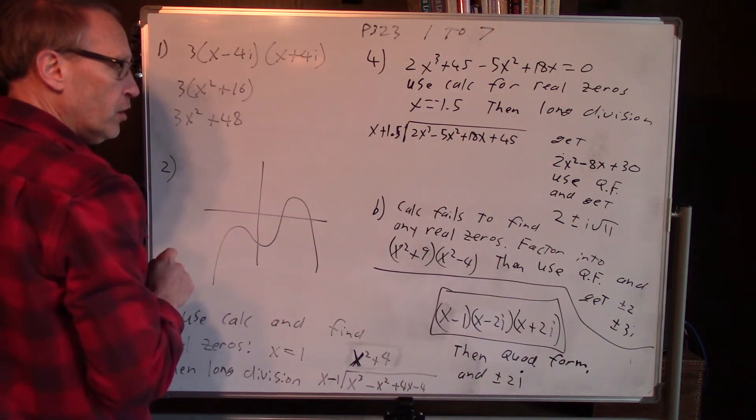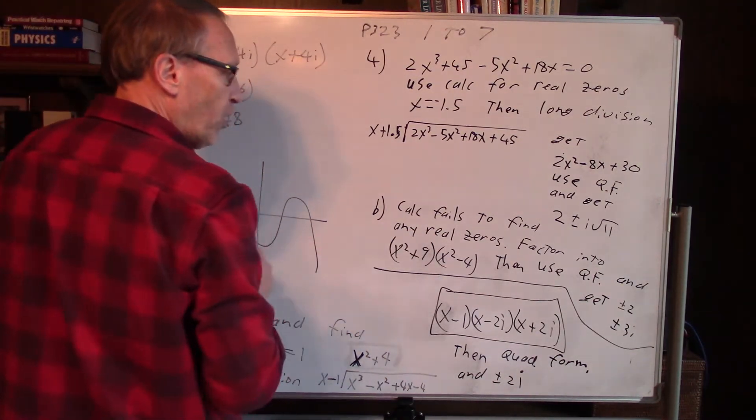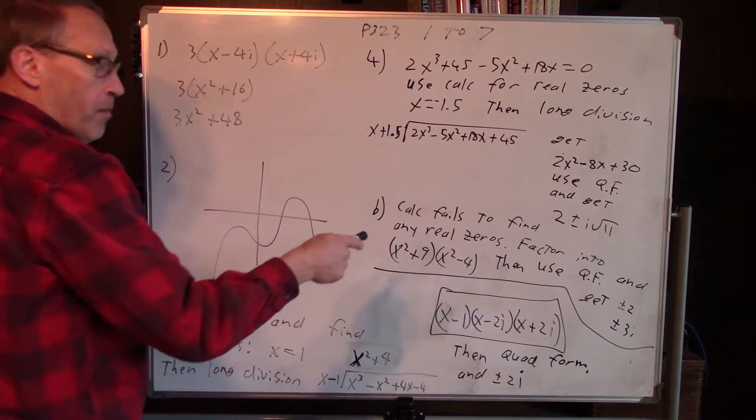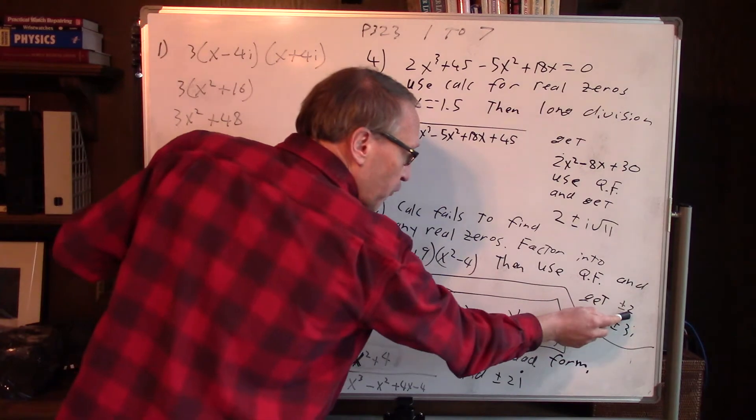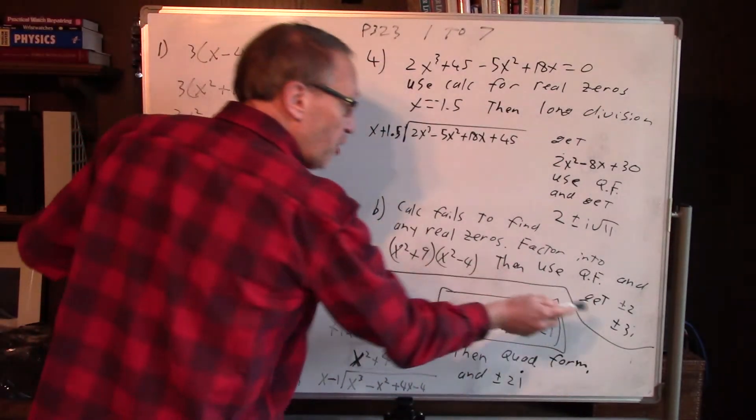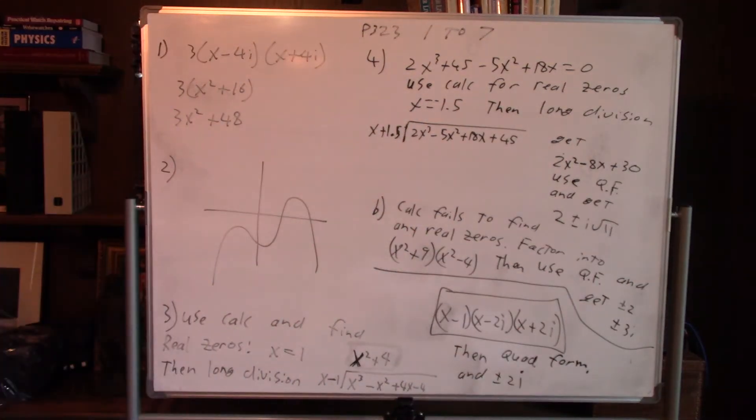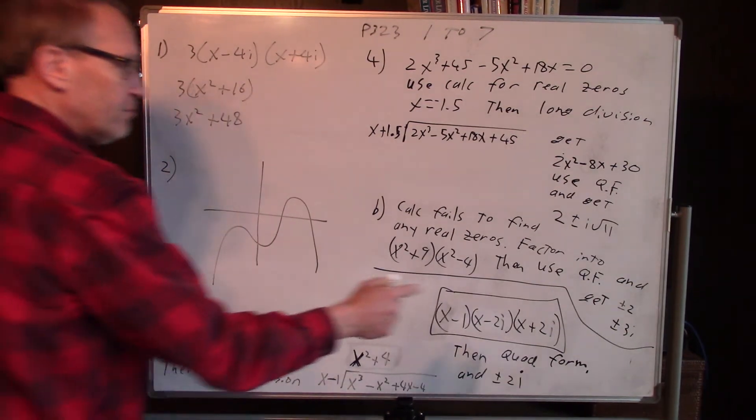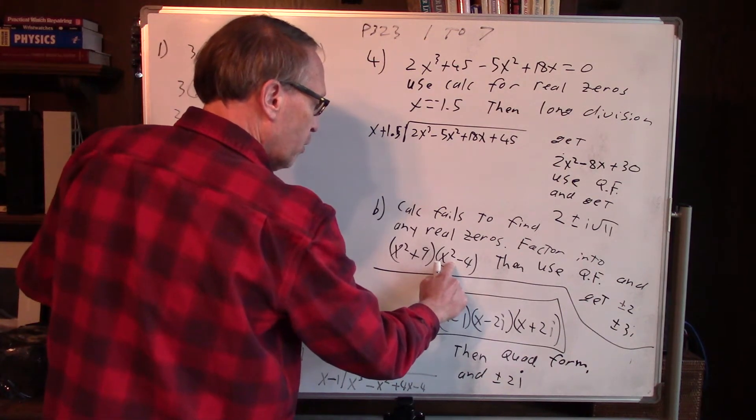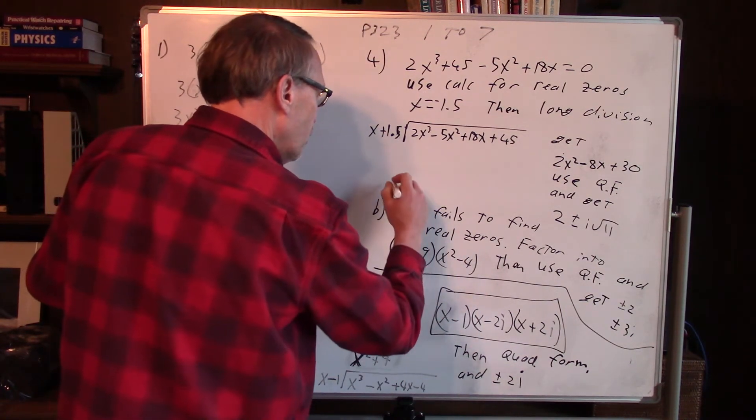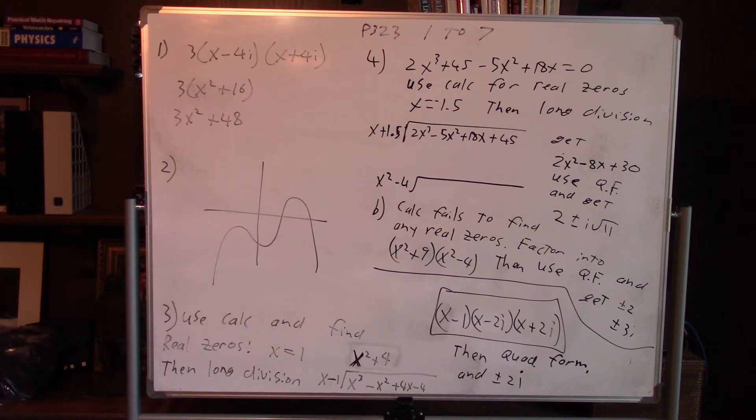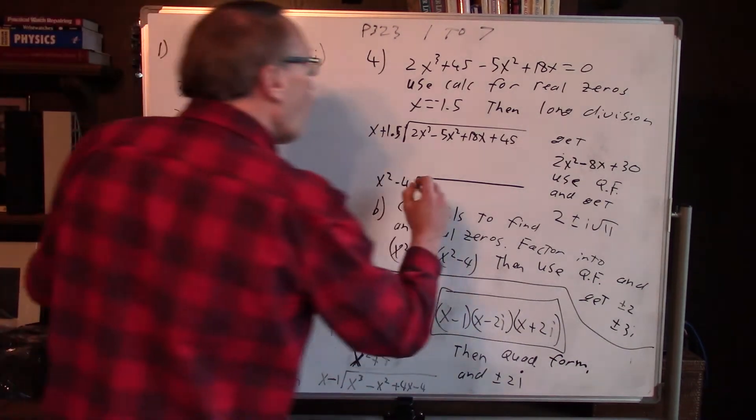But this should have found those two zeros. So the calculator should have worked in this case. Actually it should have worked. We should have gotten plus or minus 2. Then thinking about that problem again, we want to divide by x squared minus 4. Use that as the division, so we can do x squared minus 4 into the quartic, x to the 4th, 5x squared minus 36.